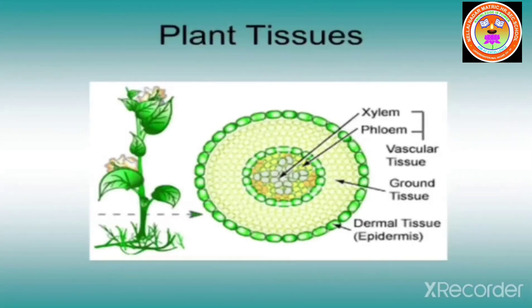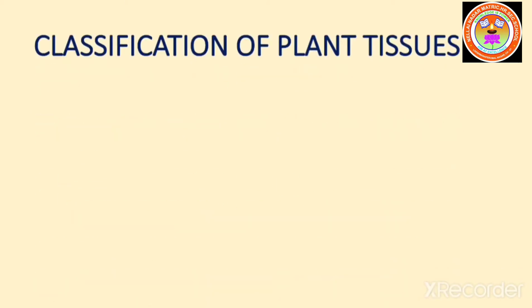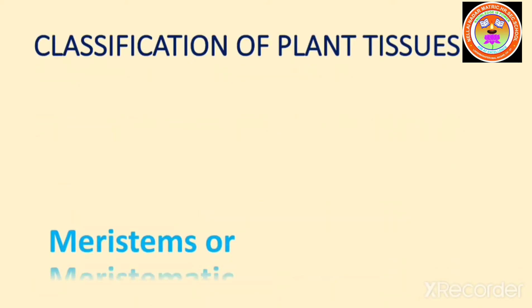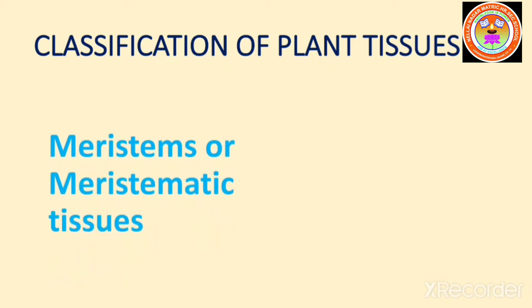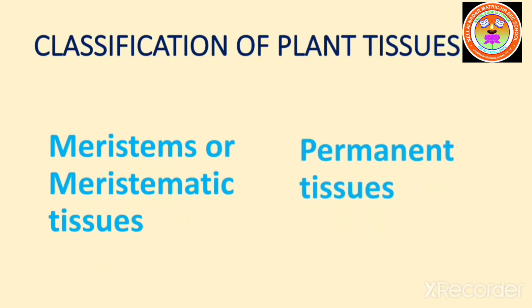Now let us move on to plant tissues. Plants are made up of vegetative and reproductive tissue. In general, plant tissues are classified into two types: namely, meristems or meristematic tissue, and permanent tissue.